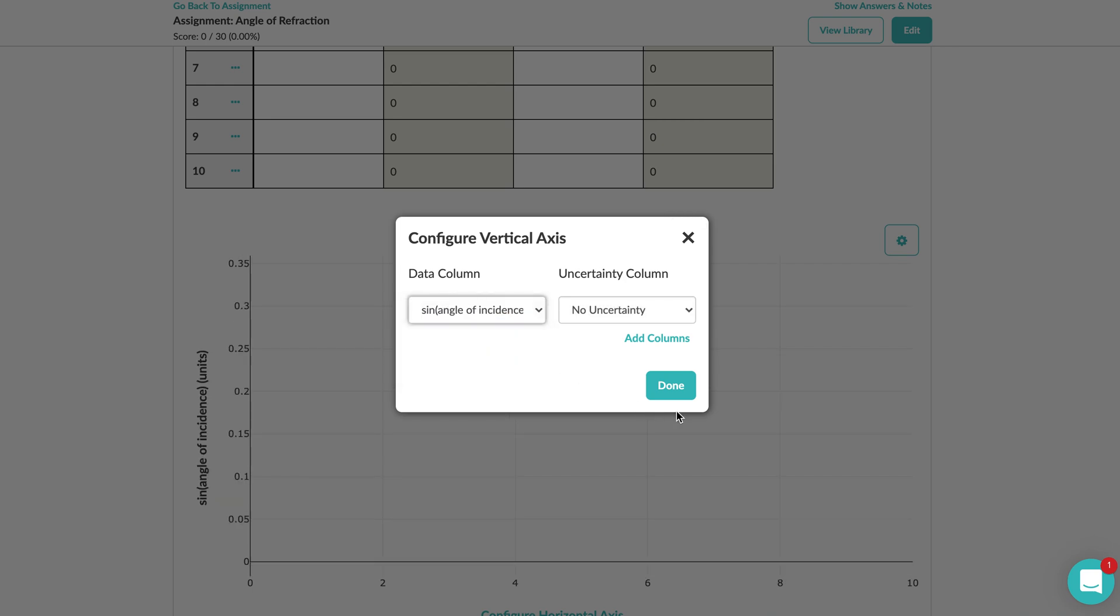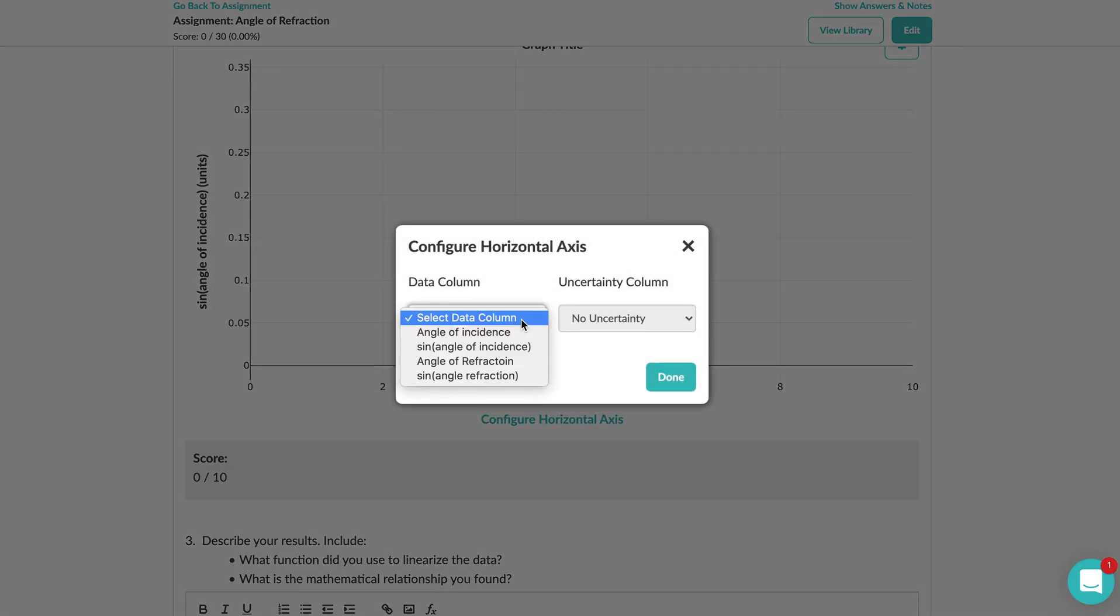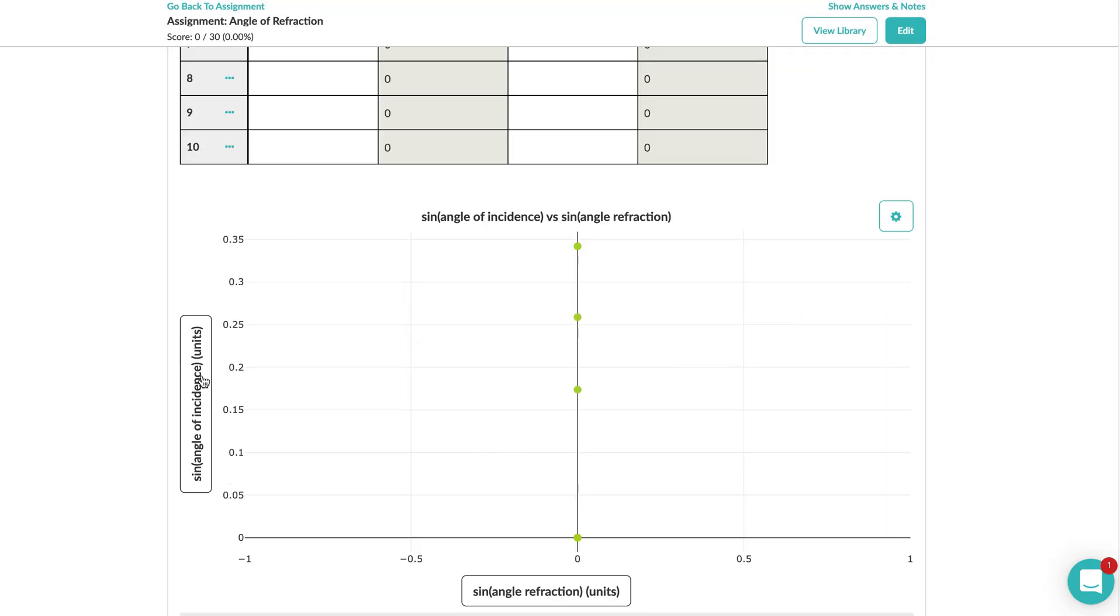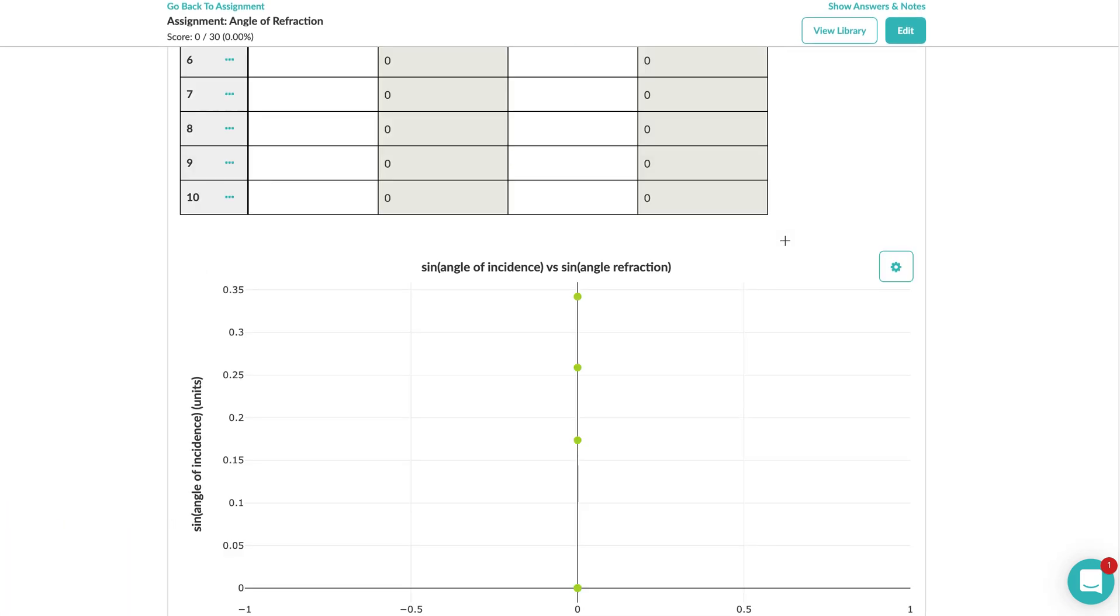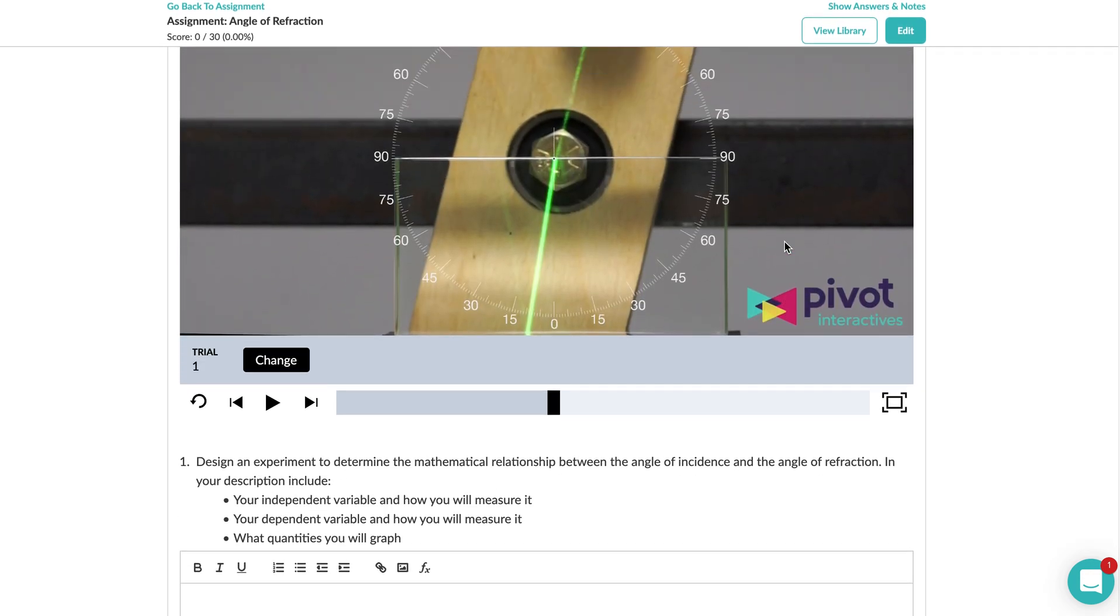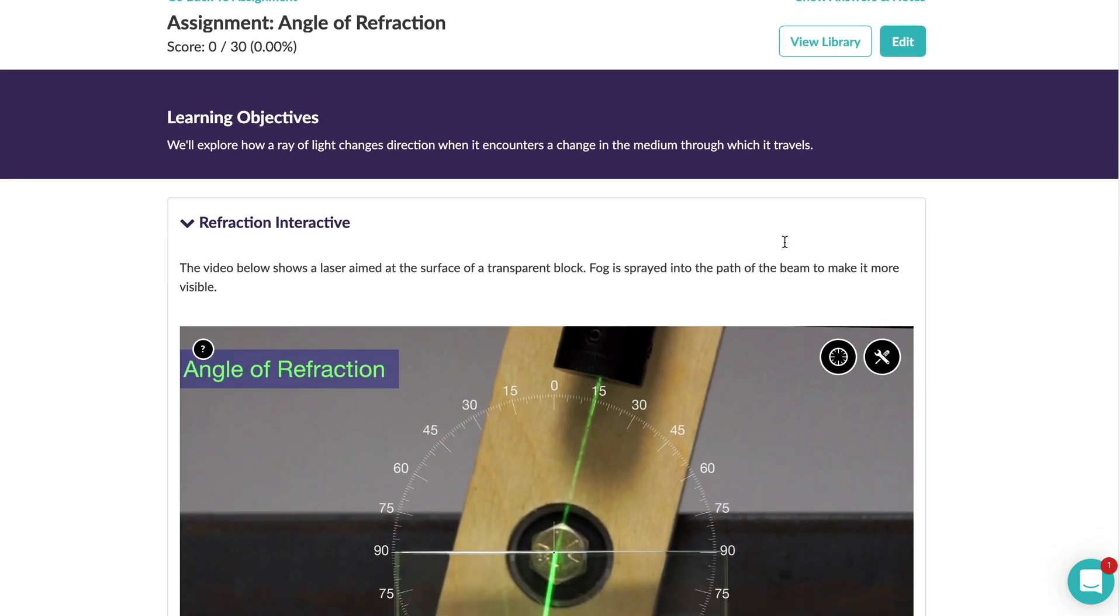To set up your axes we're going to put sine of the angle of incidence on the y, and again I talked about why earlier in the video. Then we're going to put sine of angle of refraction here. Once you take your data you should get a line. You'll want to select the curve or line of best fit and then you can answer the rest of the questions. I hope this is enough to get you started on the pivot and that's all I have.